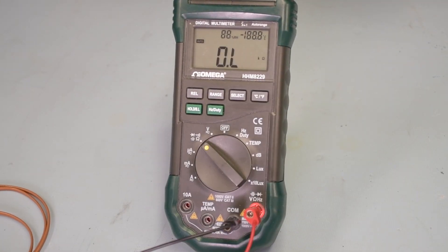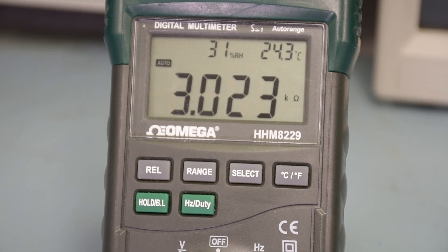So, I'm going to take my ohm meter here, and we're checking for resistance, 3.023 kilo ohms. I think we have a thermistor here, because an RTD doesn't have a resistance nearly this high.